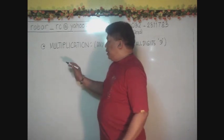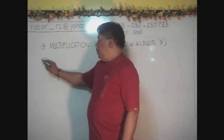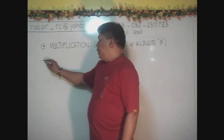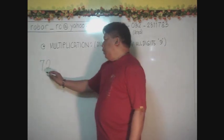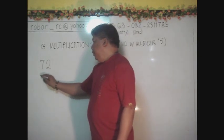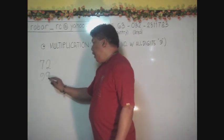Like this, for example, we have 72 multiplied by a number consisting of 9 digits.